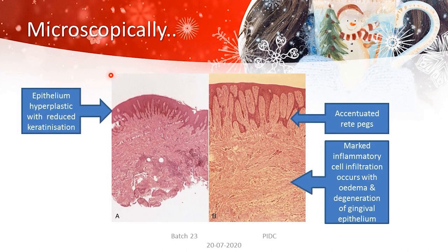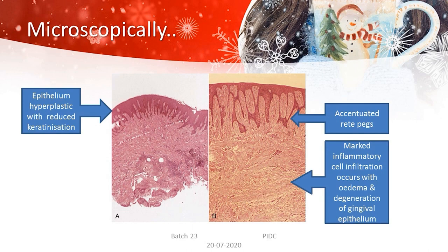Microscopically, changes in the gingival tissues include hyperplastic epithelium with reduced keratinization, accentuated rete pegs with elongated rete ridges, and marked inflammatory cell infiltration with edema and degeneration of the gingival epithelium.